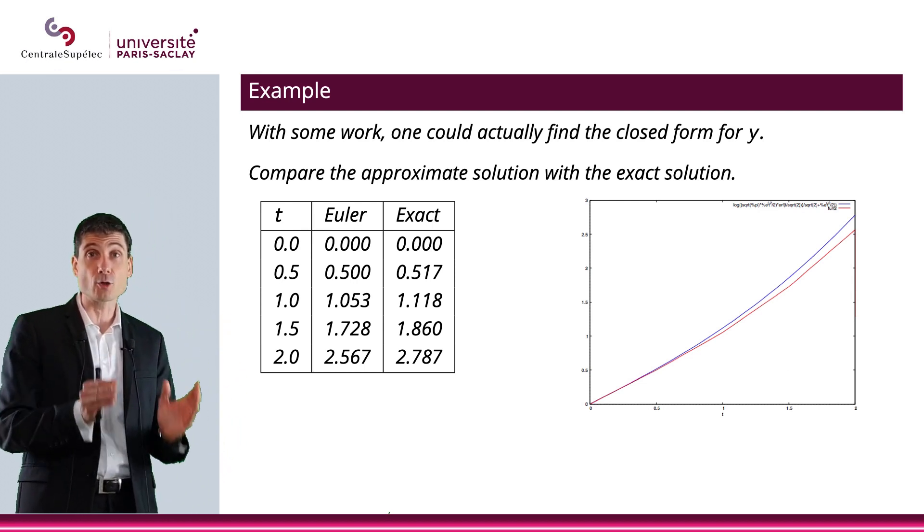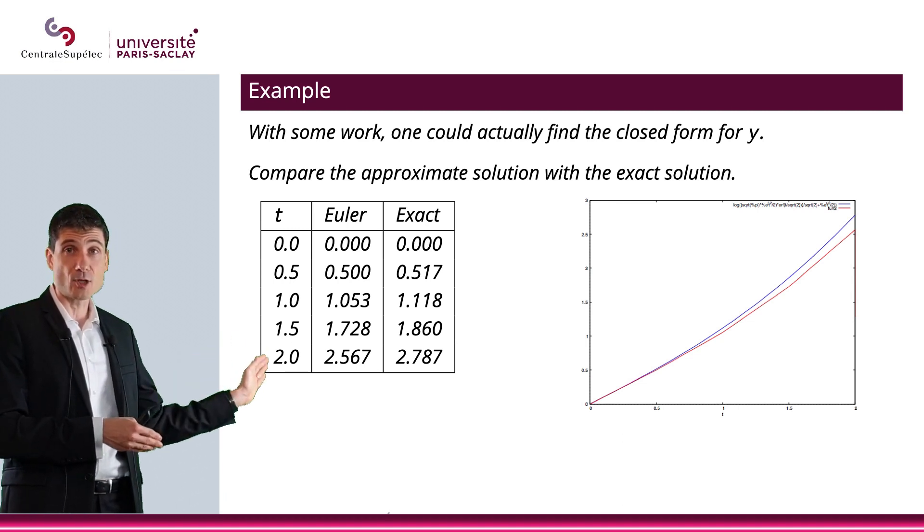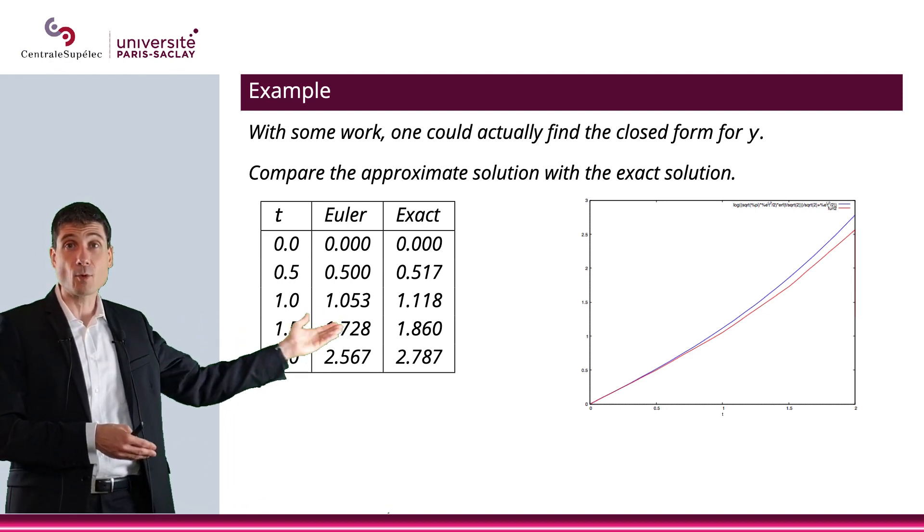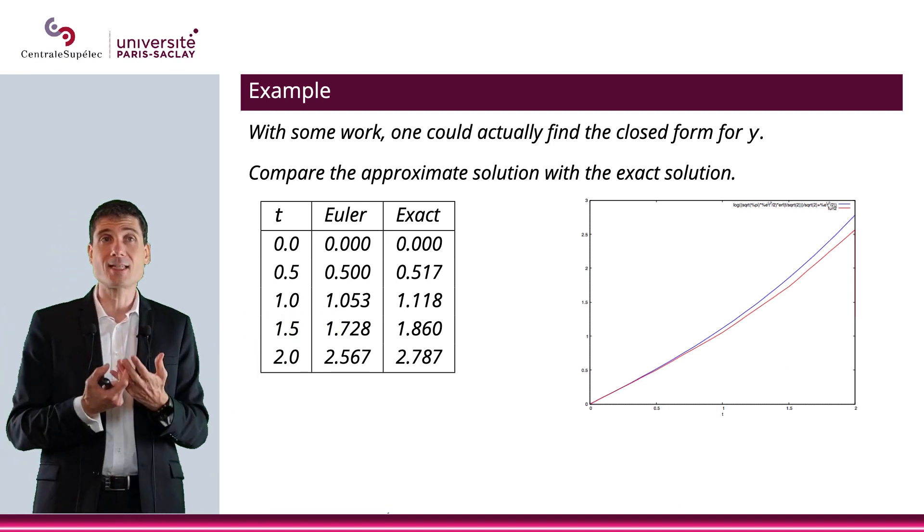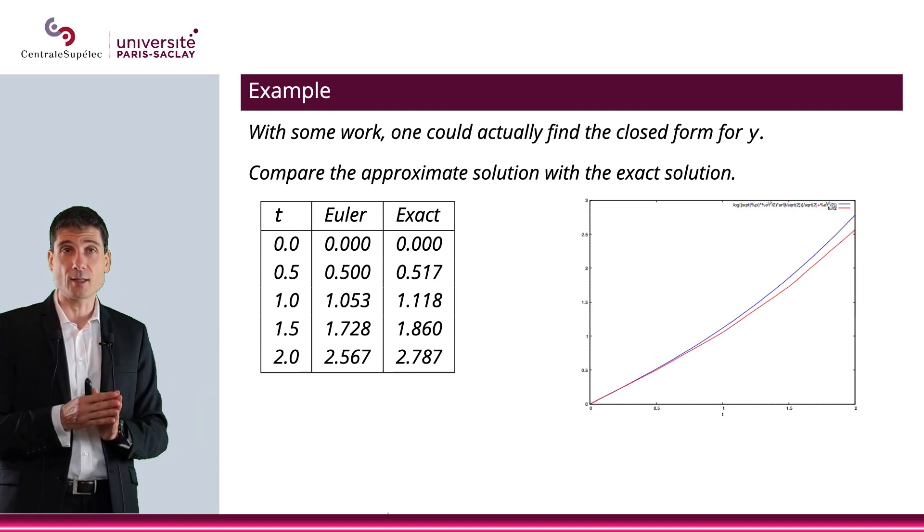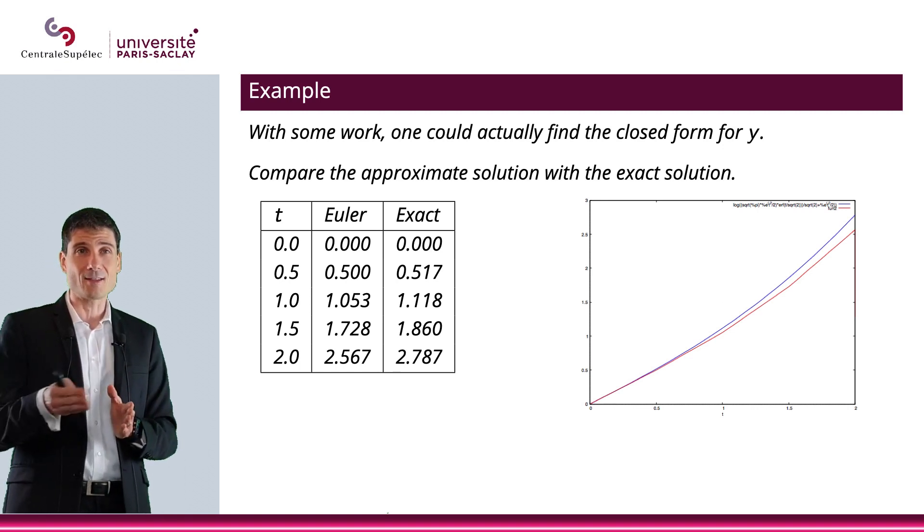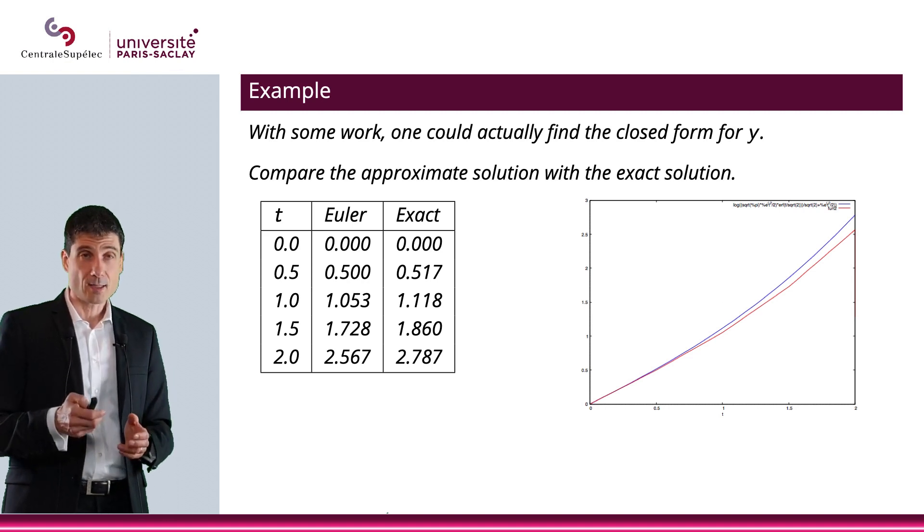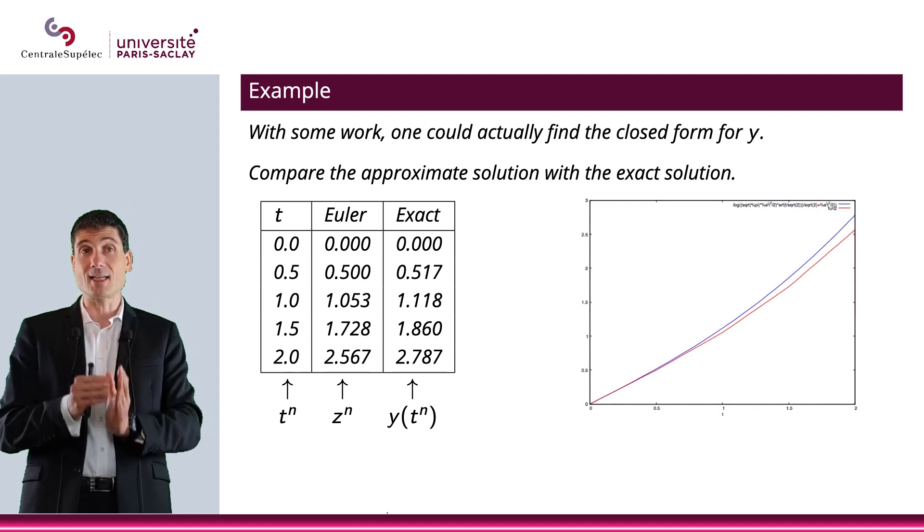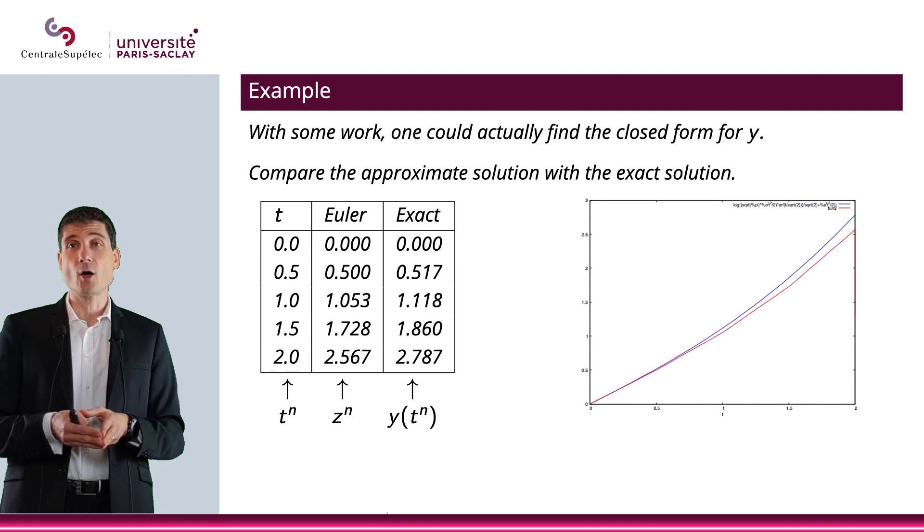So, we have an exact closed form for the solution to the ODE. And here on the table, I put T, what we find with the Euler method, and what is the exact solution. In other words, I plug in T in the exact solution to the ODE. And on the graph, I basically plotted both the Euler method and the exact solution. So, here in the first column, I have Tn. In the second column, I have Zn, Euler method. And in the third column, I have Y of Tn.